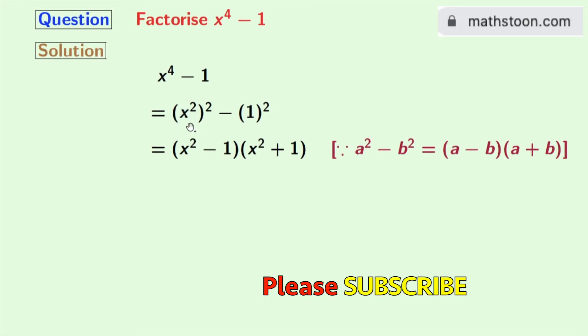So applying the formula we get x square minus 1 times x square plus 1. In the next step we will write 1 as 1 square and we will keep the remaining part as it is.